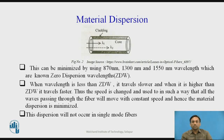When the wavelength is less than the zero dispersion wavelength (ZDW) it travels slower, and when it is higher than the ZDW it travels faster. Thus the speed is adjusted so that all waves passing through the fiber move at a constant speed, and hence material dispersion is minimized. This dispersion occurs only in multimode fiber, not in single-mode fiber.